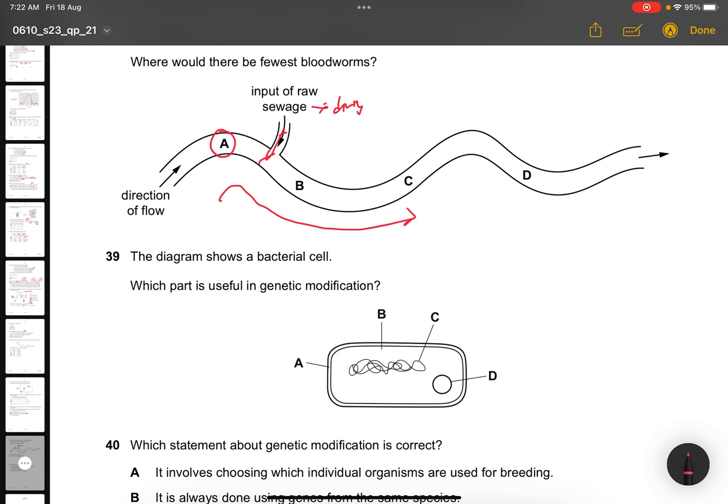Question 39. The diagram shows a bacteria cell. Which part of the cell is useful for genetic modification? Plasmid. So the plasmid is D.